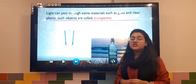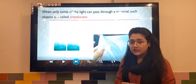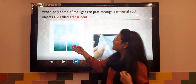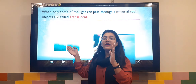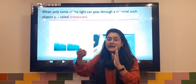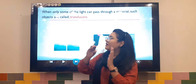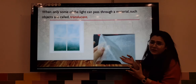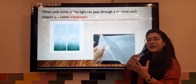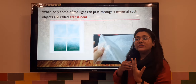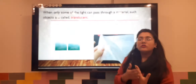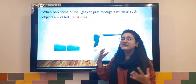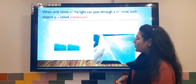Then there is another category called translucent objects — like certain windows. With translucent objects, light is passed through but it is very low. Just like a butter paper — light passes through it but it is very limited. That is why we call these objects translucent.